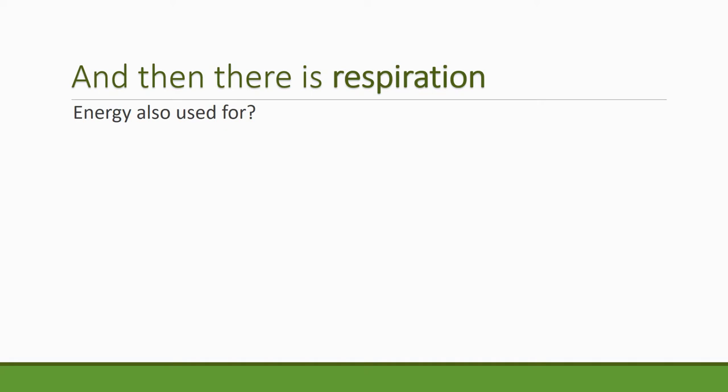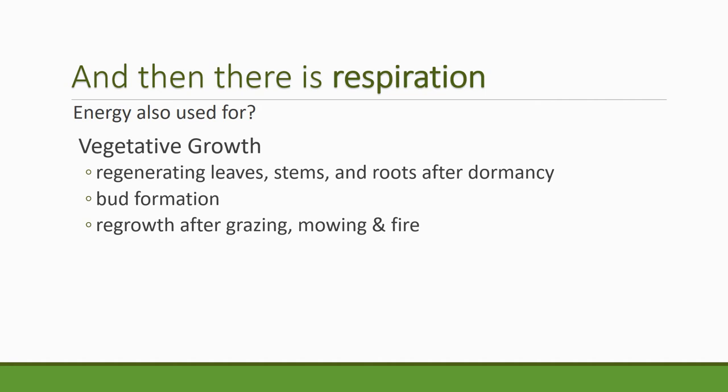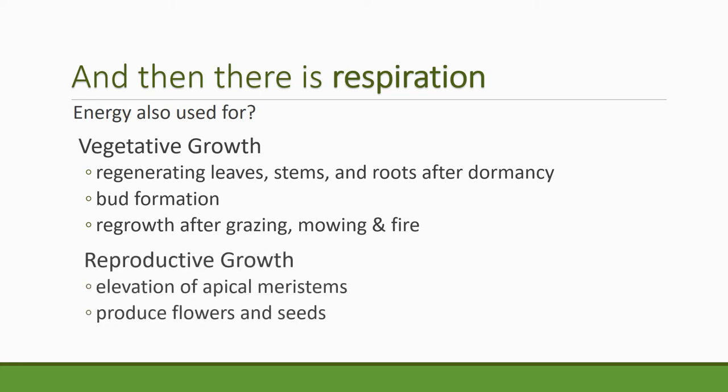Let's look more closely at that assimilation part — what is energy used for? Think about vegetative growth such as regrowing leaves, stems, and roots. Also after dormancy there would be bud formation, regrowth after fire, mowing, and grazing — all of those require energy. Reproductive growth is also important as the plant starts to elevate that apical meristem and produce flowers and seeds. If you're managing plants in the ecosystem you have to pay attention to how much energy is needed by the plant and make sure it has that energy to go through its life cycle.